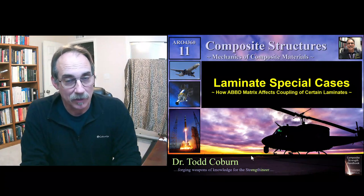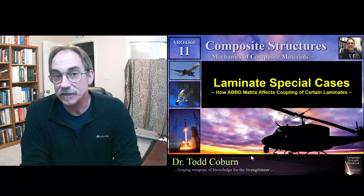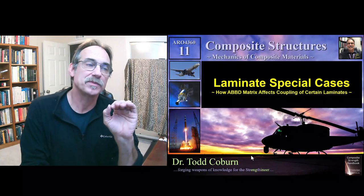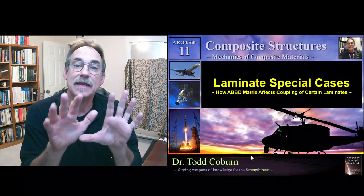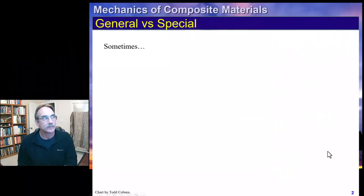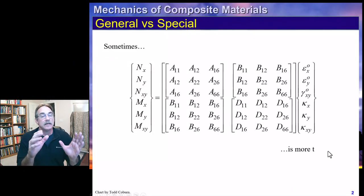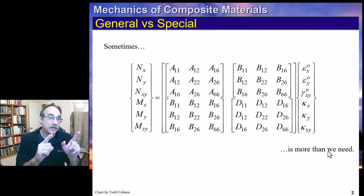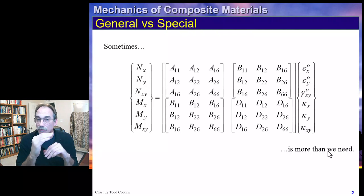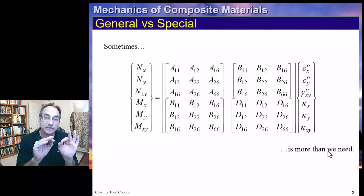Hey folks, Todd Goldburn here with your Aerospace Structure Series. This lecture is on laminate special cases, or more specifically how the ABD matrix affects coupling for certain kinds of laminates. We've seen how the ABD matrix is the key to relating strains and curvatures to running loads and moments, but there are a number of cases where we can shortcut our analysis and make it simpler.